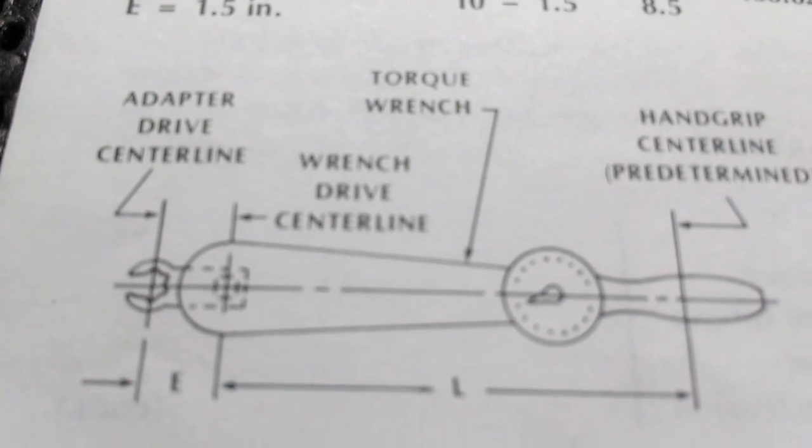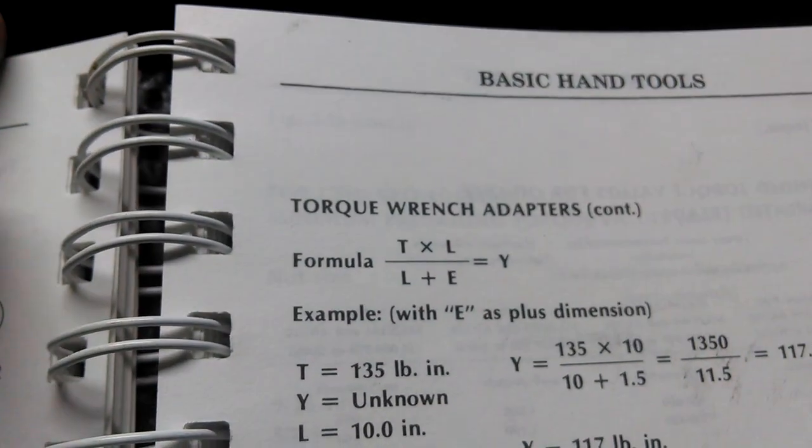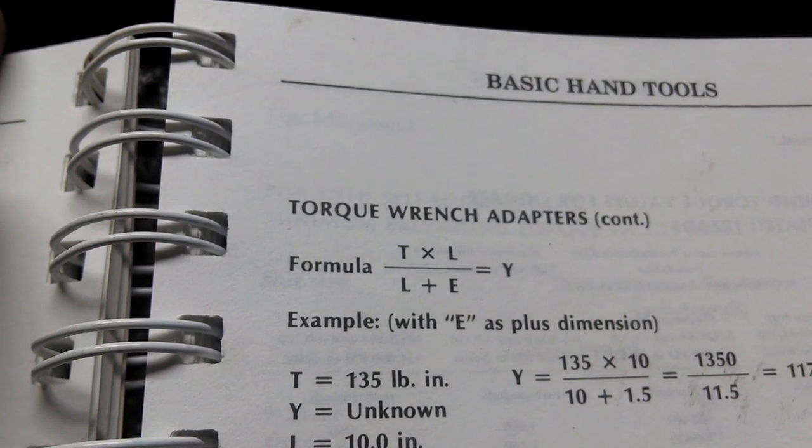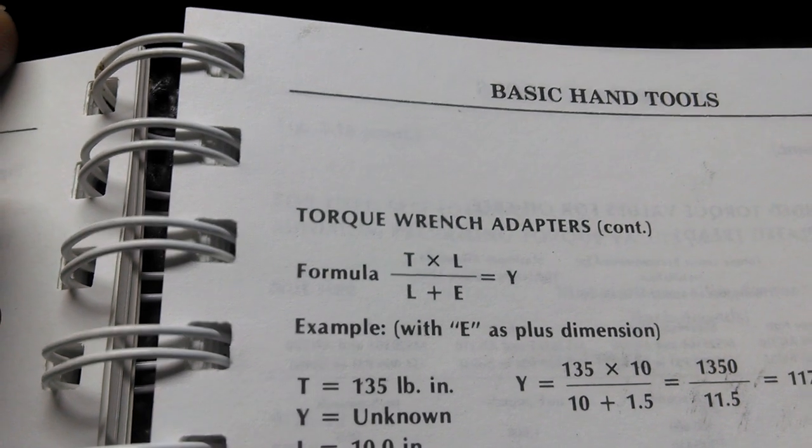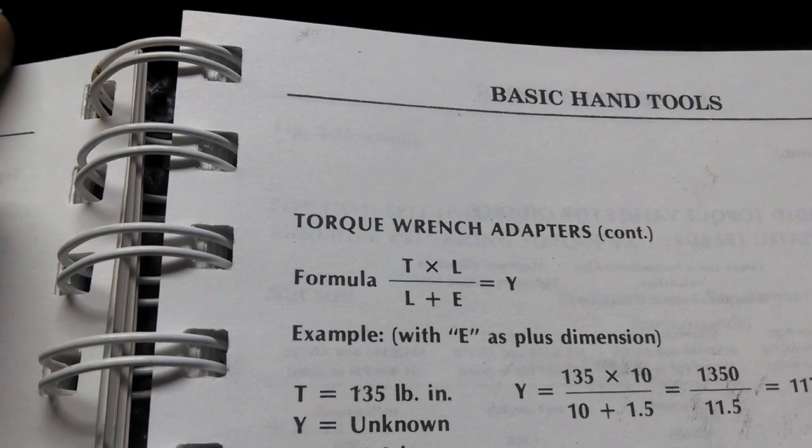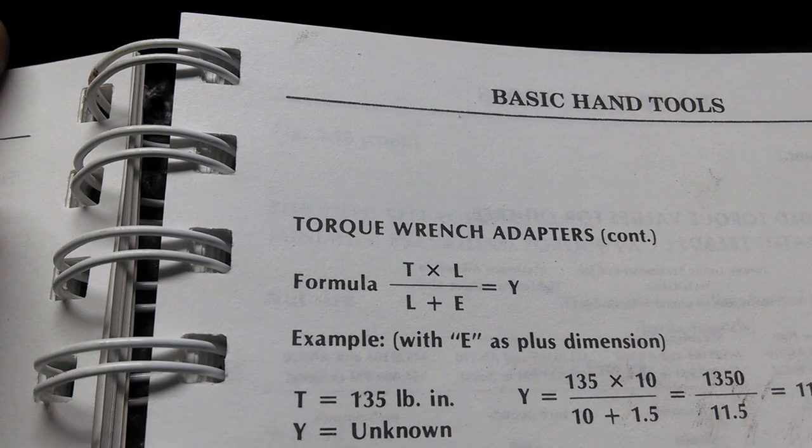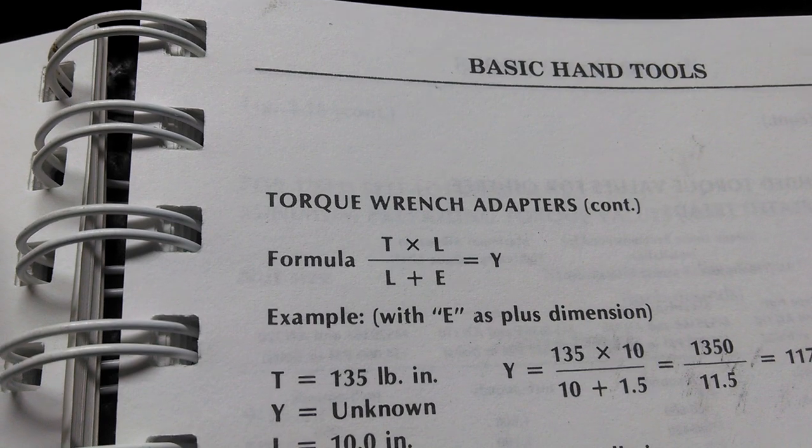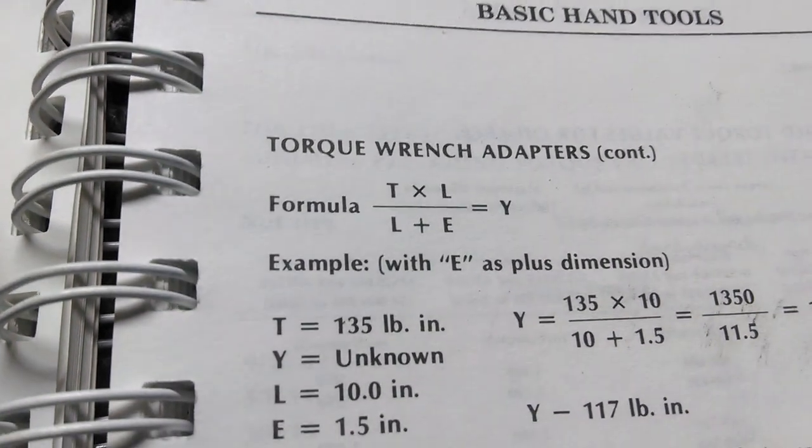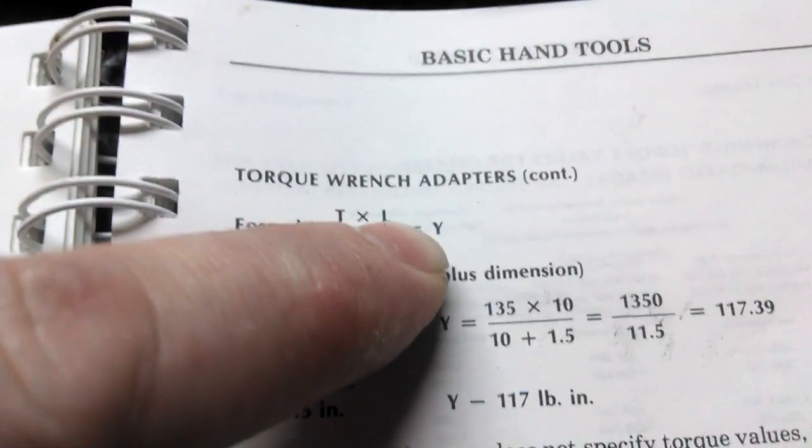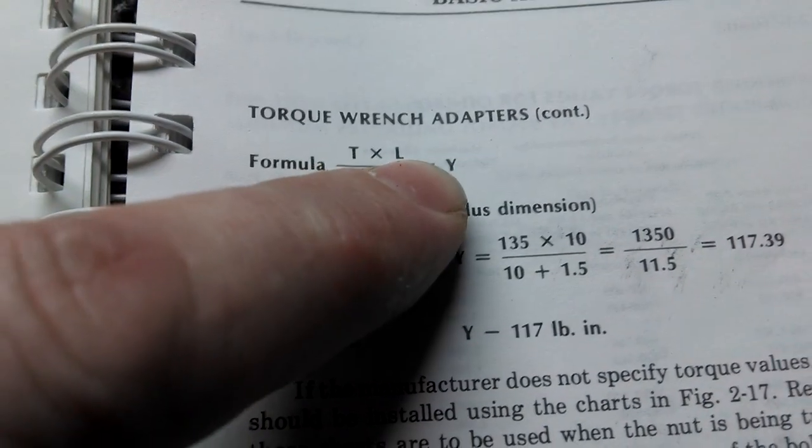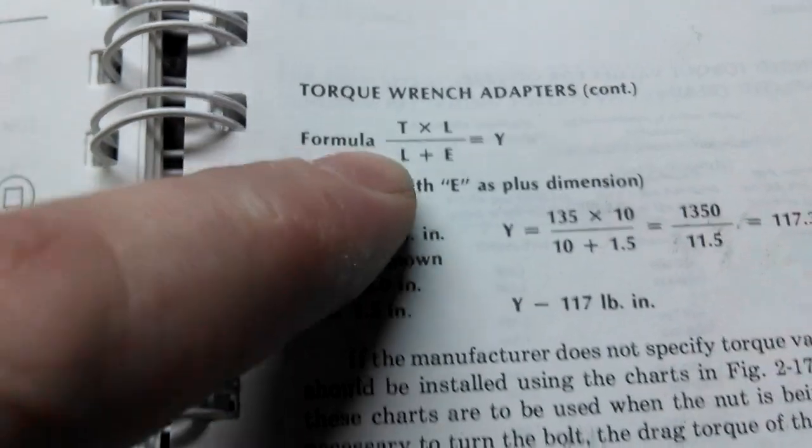So anyway, here is the formula for when the way most people hold their torque wrench. D, which is the desired torque, which would be 30 foot-pounds, times L, which is the length of your lever, divided by L, which is length of lever, plus E, which is length of extension, and that's going to equal Y, which is the indicated torque. So this is what you will set your torque wrench to in order to get your actual torque.